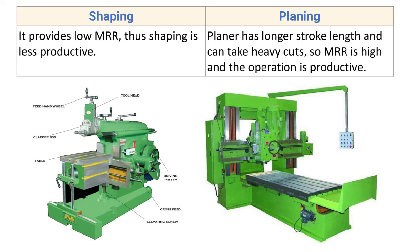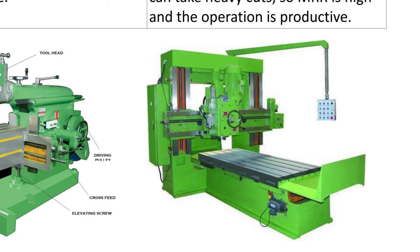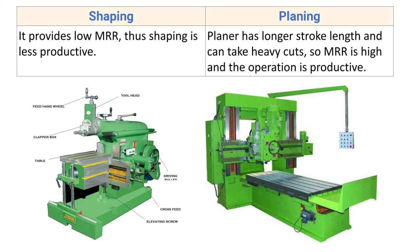The planer is a larger machine and can accommodate heavier and larger jobs. The planer machine has a longer stroke because of its long table, and it can be used for heavy cuts as it is a bulky and heavy machine. This gives a higher material removal rate compared to the shaper machine, making it more productive.